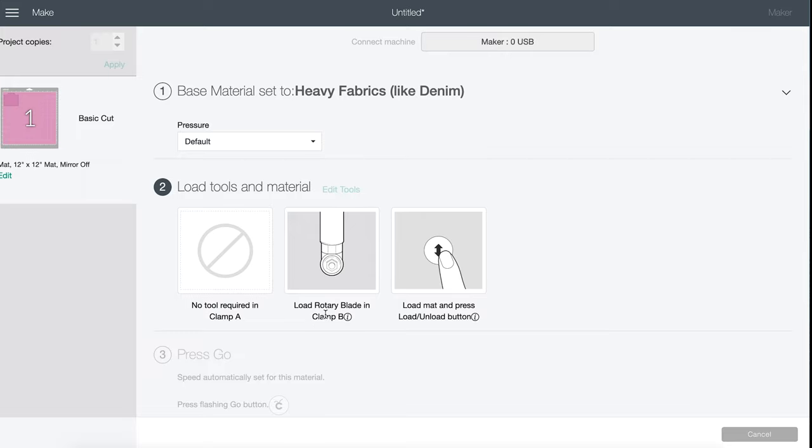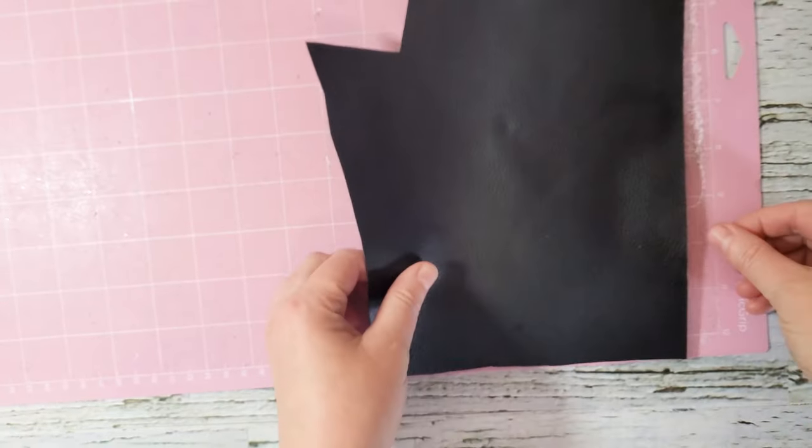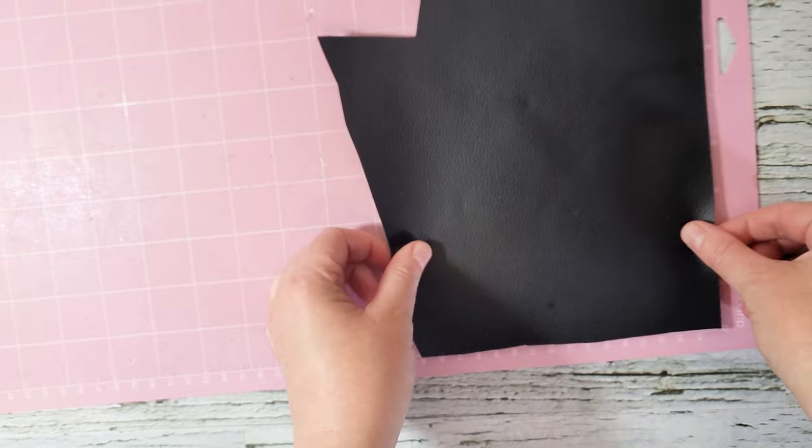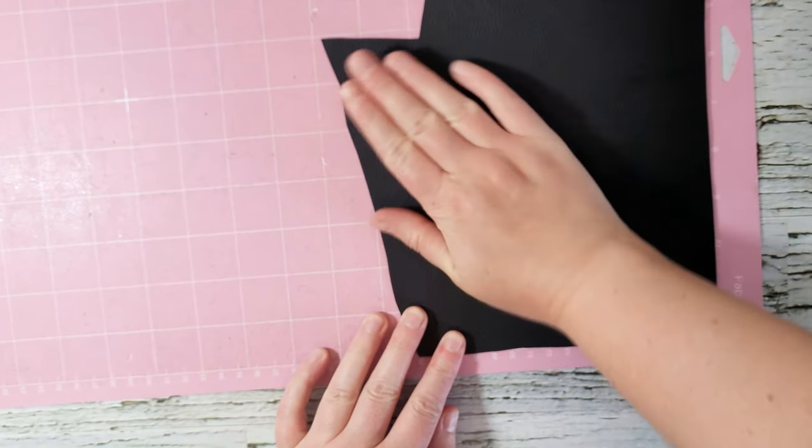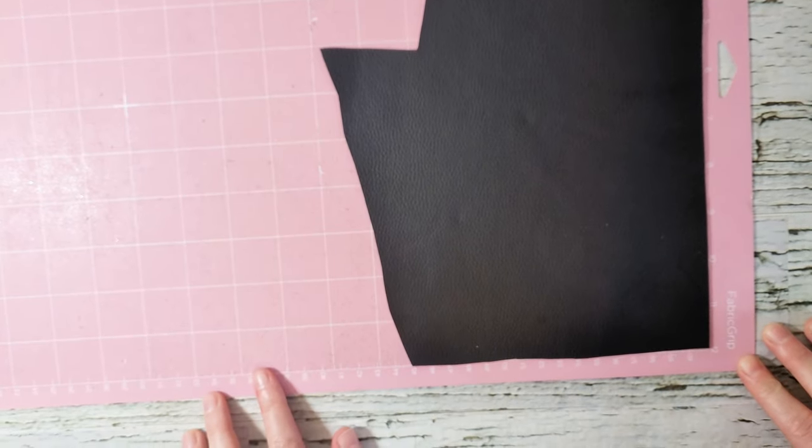Here it's going to tell you to upload the rotary blade and then you load your fabric and press the cut button. Put the fabric onto the cutting mat and now it's all ready to be loaded into the Cricut machine.